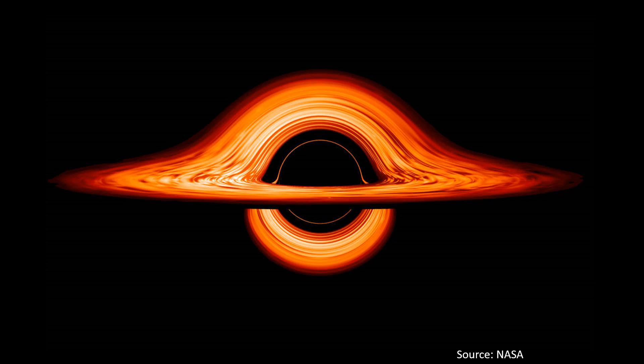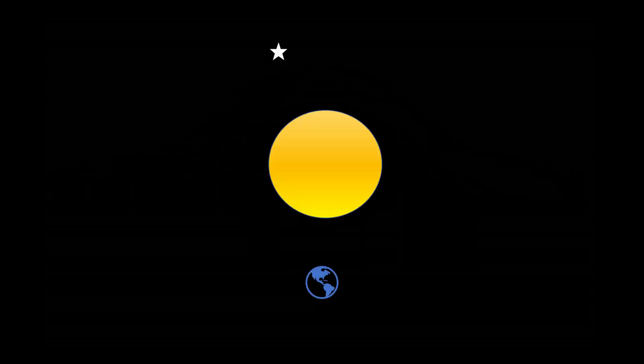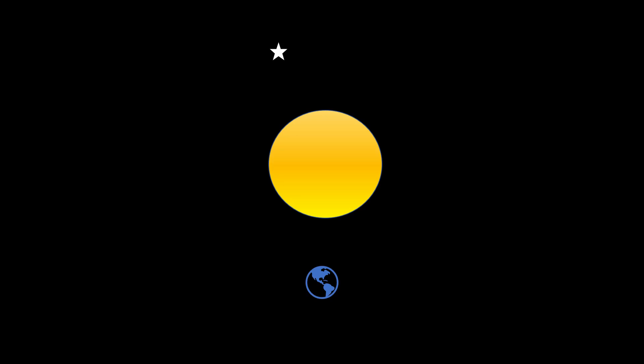Before I can explain that, I need to tell you how very heavy objects impact the way light travels. Let's say we're on Earth and there's a star on the other side of the sun. Common sense would lead us to believe that because the sun is in the way, we would not be able to see the star, as the light from the star will get blocked by the sun.